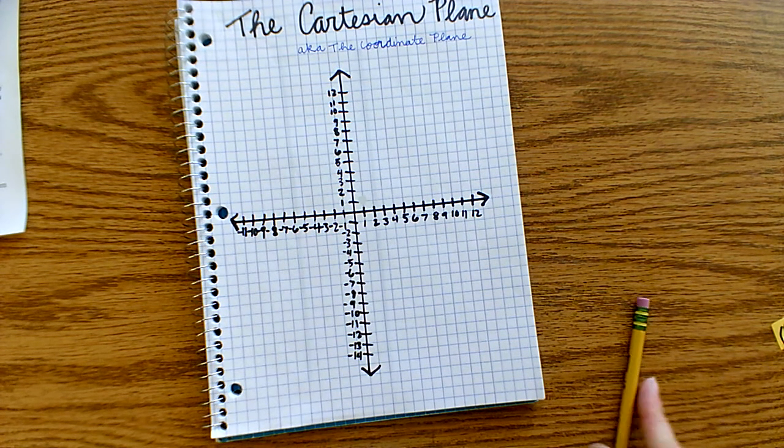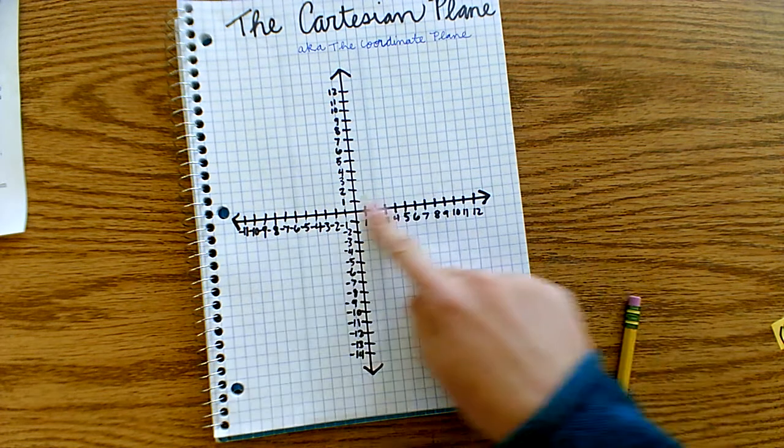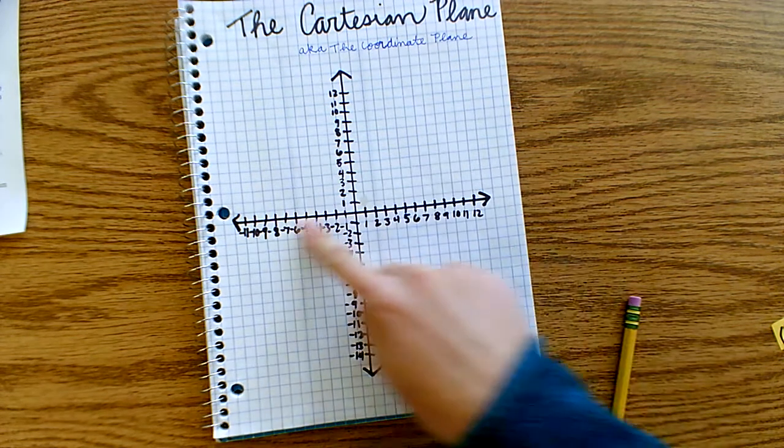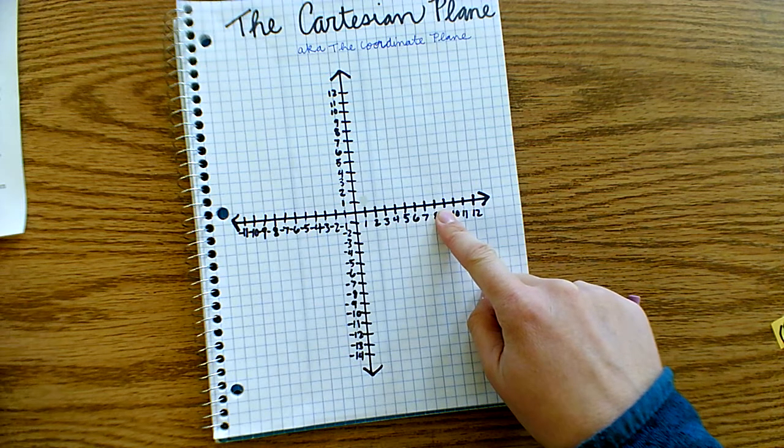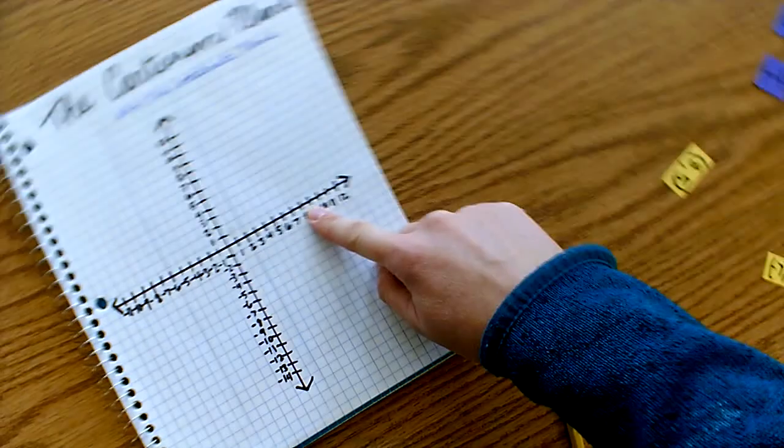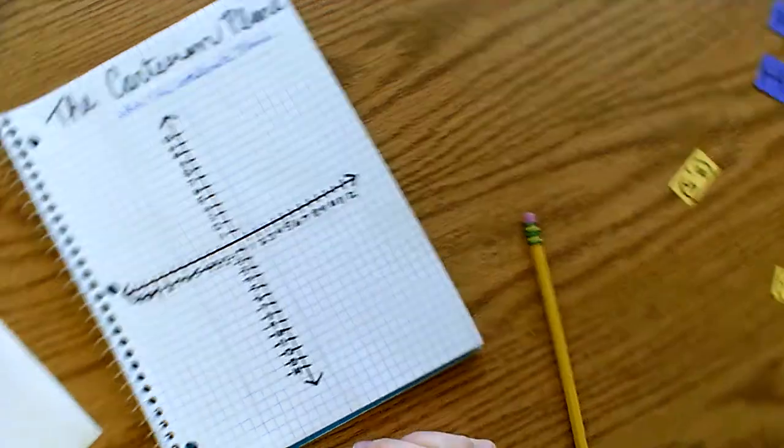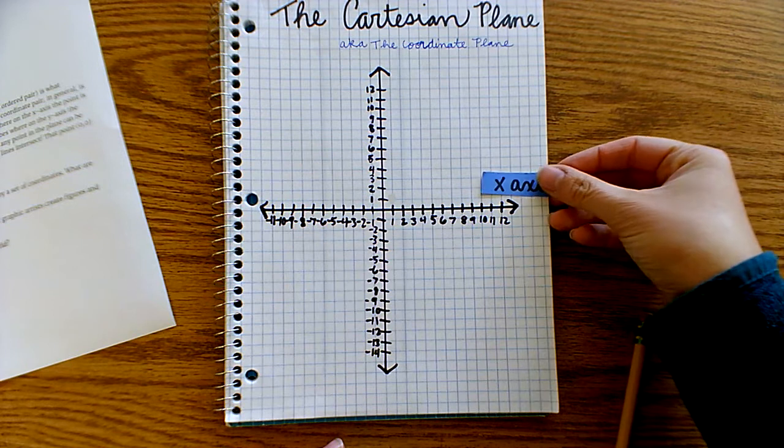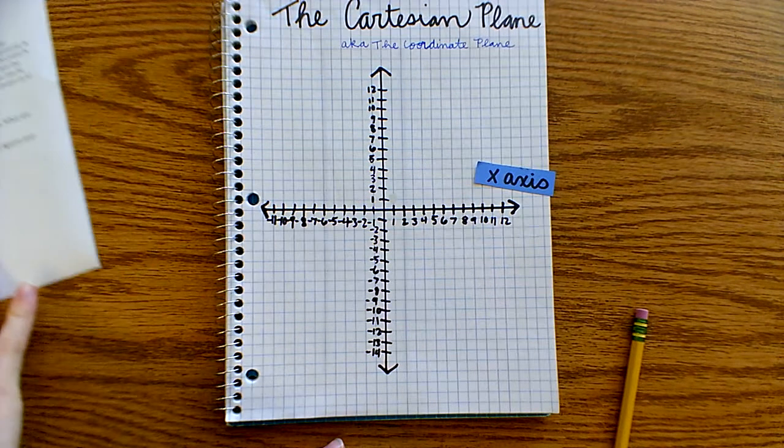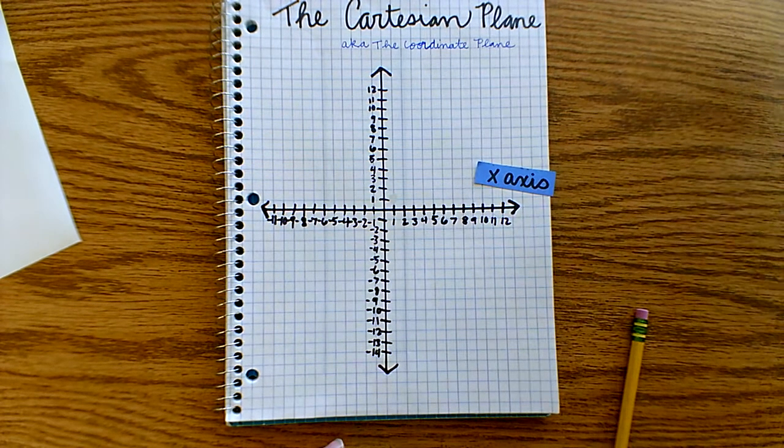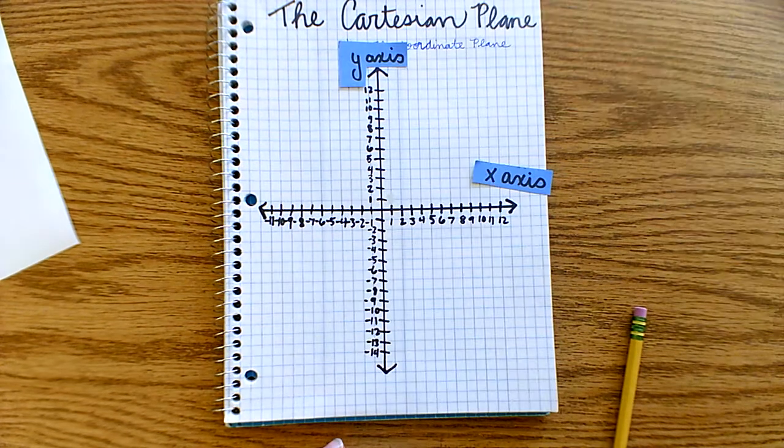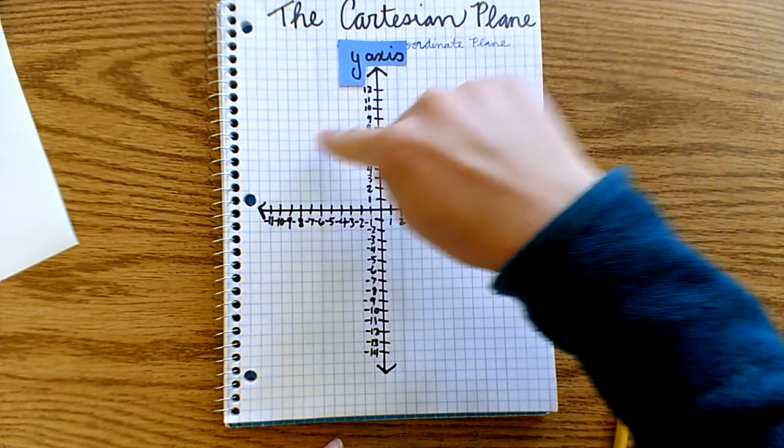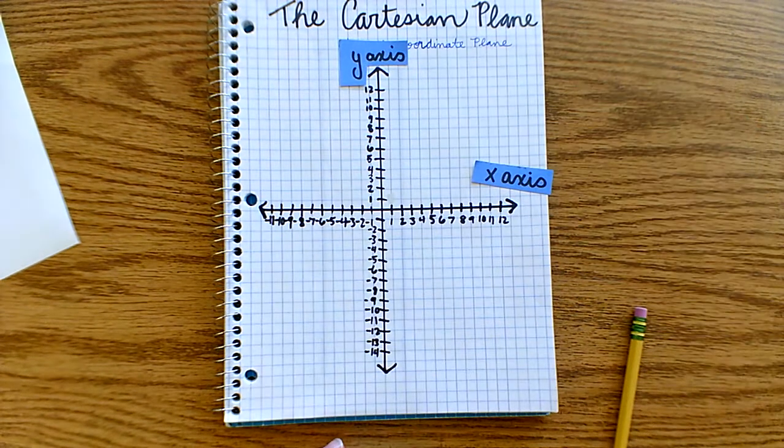Cartesian coordinates are used to locate a point in space by giving it a relative distance from two perpendicular lines. Perpendicular lines mean that they intersect. Any point, line, or figure can be precisely located by referencing these axes. The horizontal axis is called the x-axis. And the vertical axis is called the y-axis. I always remember that this is the y-axis because the letter y has that little tail that drops down just like a vertical line does.